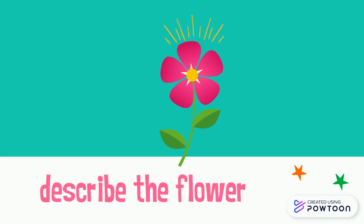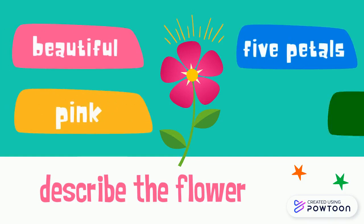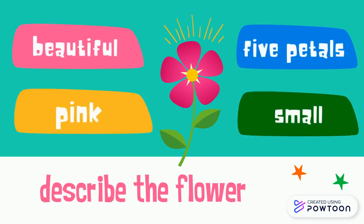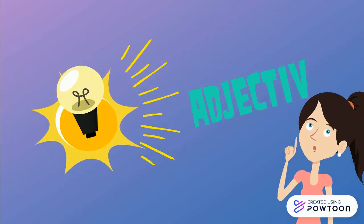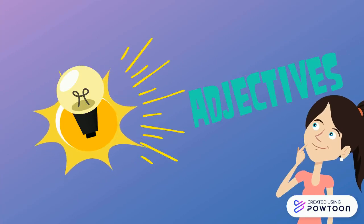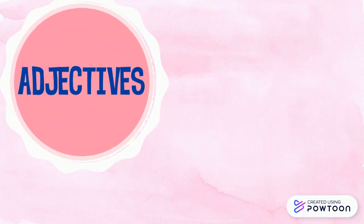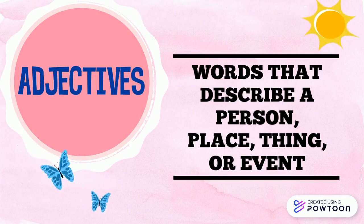You might have thought of the words: beautiful, five petals, pink, and small. These words are called adjectives. Adjectives are words that describe a person, place, thing, or event.